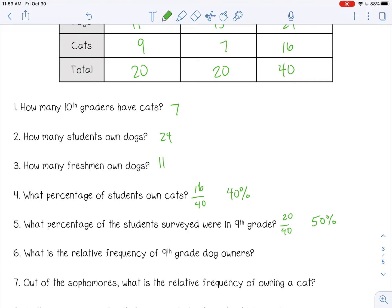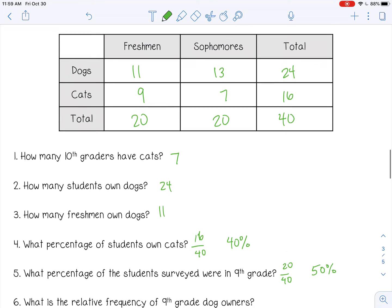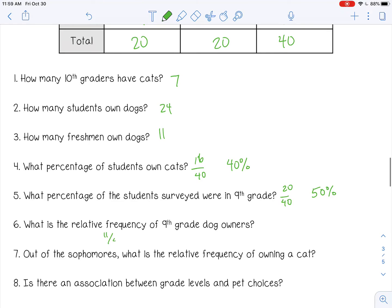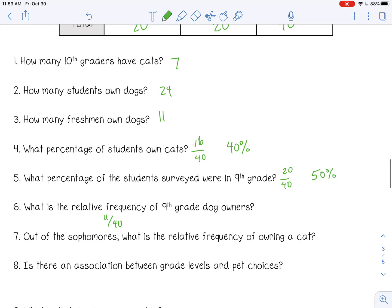What is the relative frequency of ninth grade dog owners? That would be here. Ninth grade dog owners, 11 out of 40. Remember, make sure you can write this as a decimal, a fraction, or a percent. Here is my fraction. I can't reduce that. Let's change it to a decimal, so about 0.28 or about 28%. You can round differently if you want, or if your teacher requires you to round differently, that's fine.